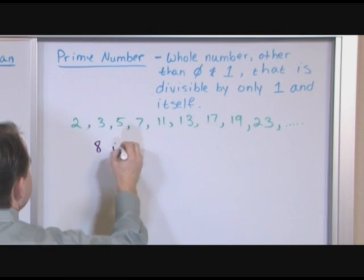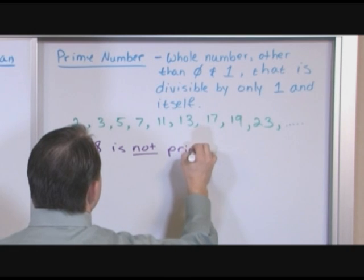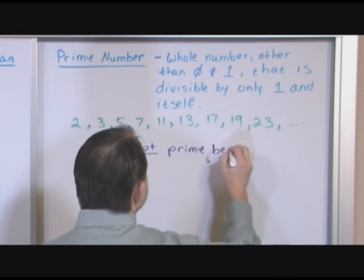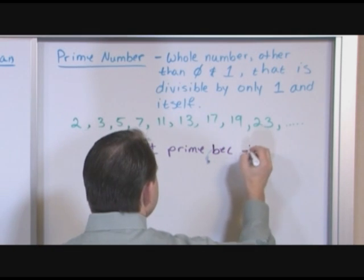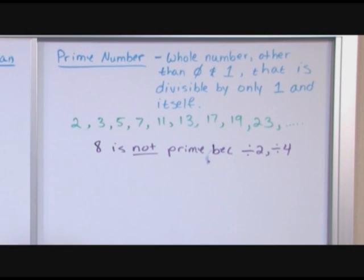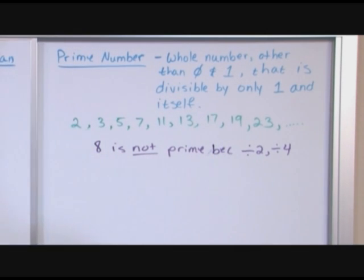The number eight is not prime. The reason it's not prime is because you can divide it by two and by four. Eight divided by two gives you four, and eight divided by four gives you two. So those are two additional things besides one and eight you can divide into there, and so it's not prime.